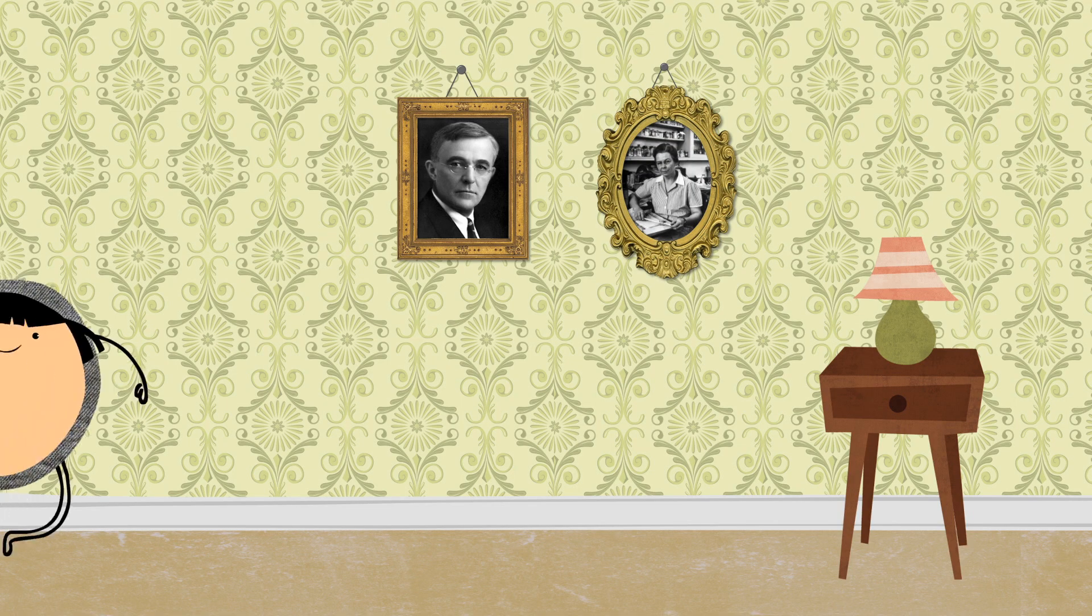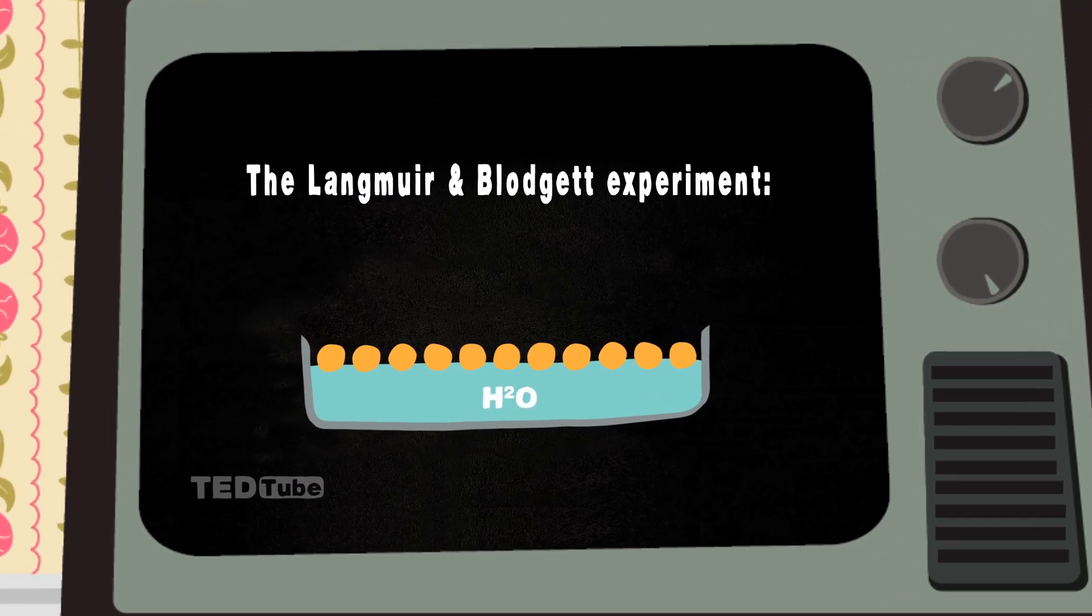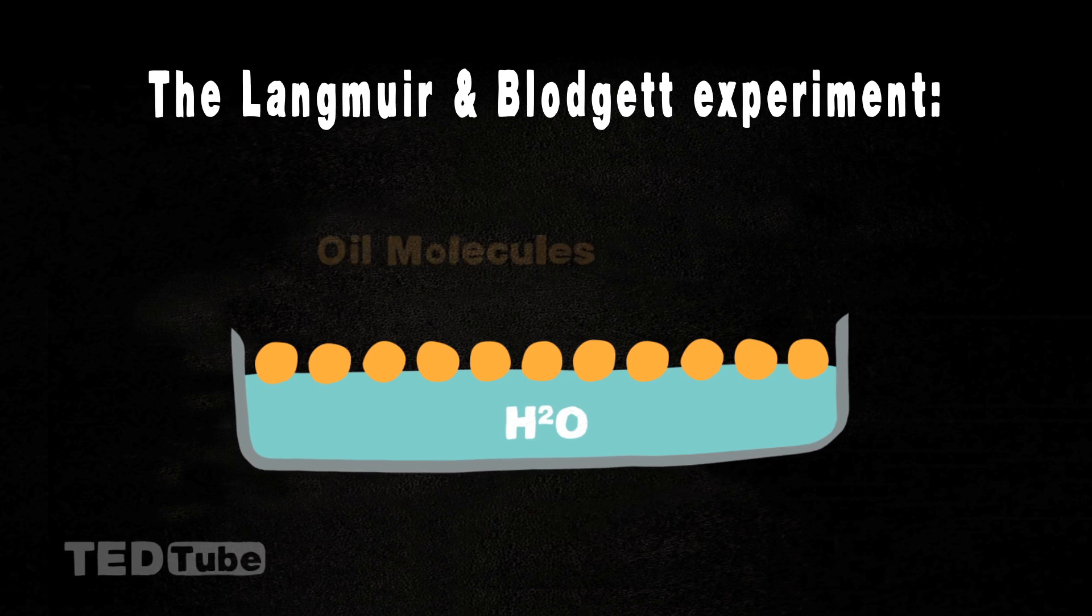Later, in the 1920s, GE scientists Irving Langmuir and Kathleen Blodgett reexamined the problem with a more elaborate contraption and found that those tiny slicks were in fact a single layer of oil molecules.